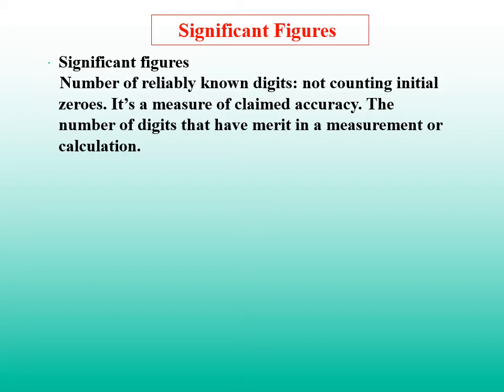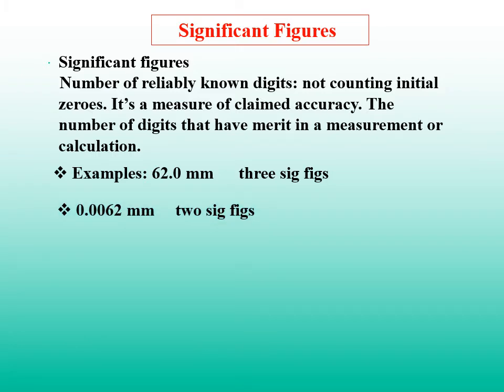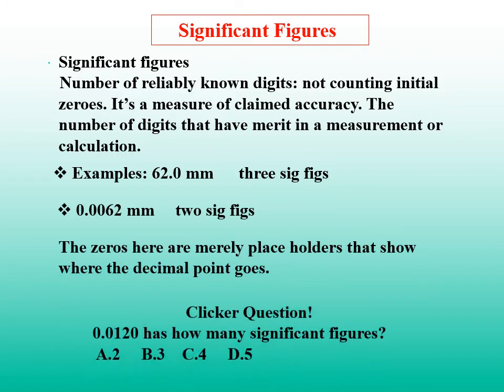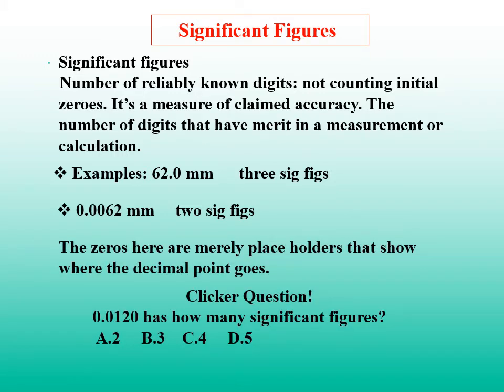For example, there are three significant figures in the number 62.0 mm, but for the number 0.0062 mm, there are two significant figures in the number. The zeros here are not significant figures that show where the decimal point goes. For the number 0.0120, how many significant figures are there? Three, right?